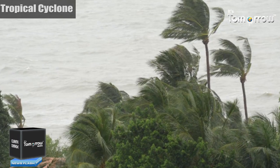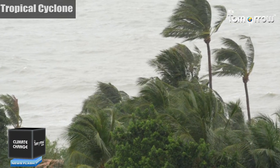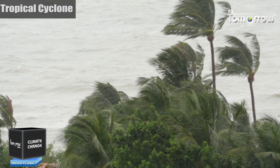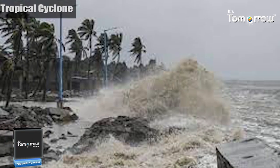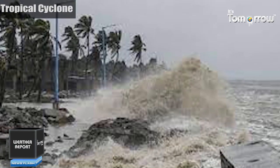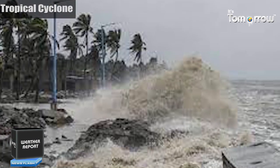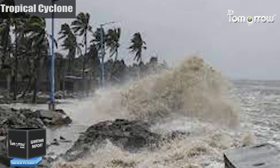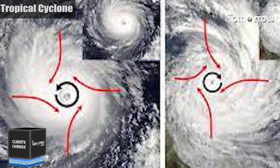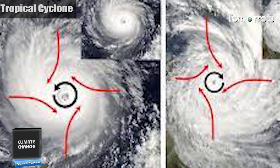The word 'tropical' refers to the geographical origin of these systems, which form almost exclusively over the tropical seas. 'Cyclone' refers to their winds moving in a circle, whirling around their central clear eye...